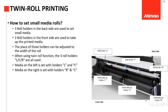Ini untuk tampilan twin roll printing-nya. Jadi kalau misalkan kita menggunakan twin roll printing, dia menggunakan feeding system dan take-up system yang memang diberikan khusus. Jadi ada yang sebelah kanan dan sebelah kiri. Nanti bahan yang satu taruh di sini, bahan yang kedua taruh di sini. Nanti feeding-nya pun nanti digulung di yang kecil ini.